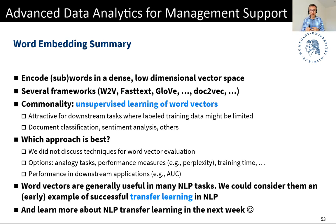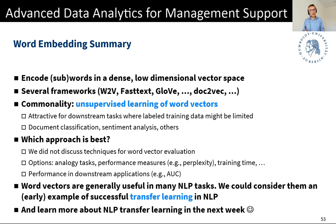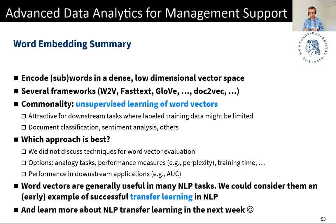Word vectors, no matter which you prefer, are useful in many if not all NLP tasks. Typically in downstream applications, we don't learn them from scratch — we use pre-trained word vectors available on the web. The GloVe authors made many pre-trained embeddings available for download. Using pre-trained word vectors in your downstream task is actually a form of NLP transfer learning.